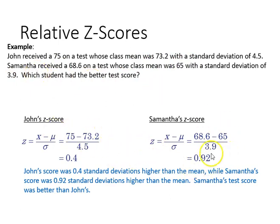Even though there's different classes that they're in, we could see that John's score was 0.4 standard deviations higher than the mean, while Samantha's score was 0.92 higher than the mean, so Samantha's score was better in a relative sense.